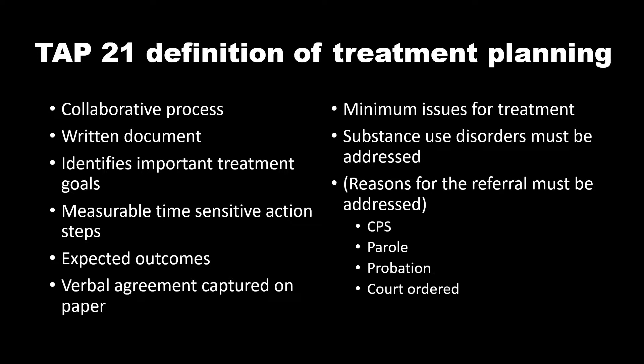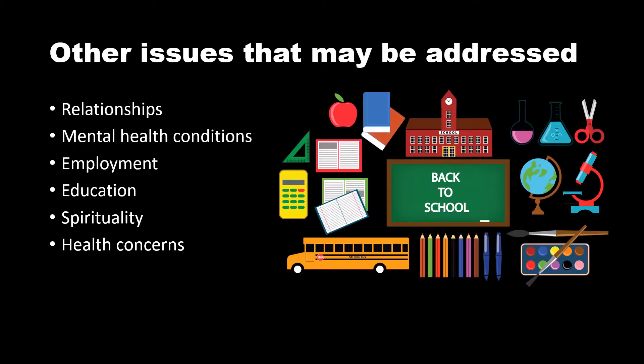There are minimum issues that need to be covered in treatment. Substance use disorders must be addressed. Another thing that must be addressed is reasons for the referral. If the client was sent by CPS, parole, probation, or other court-ordered program, we need to make sure that our treatment plan includes all of the requirements that the court or other referral source has imposed on the client. A drug and alcohol treatment plan may include a number of other issues besides substance abuse, even if these are outside your scope of practice and you will be referring the client to other providers. Relationships need to be looked at because they are a frequent source of relapse. Mental health issues need to be addressed also. Employment, education, and spiritual issues may be included, and physical health concerns will also be included in your plan.